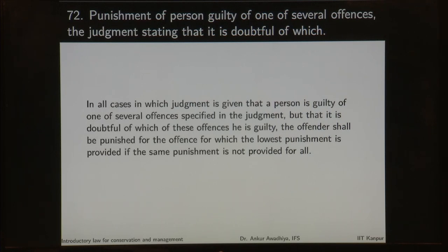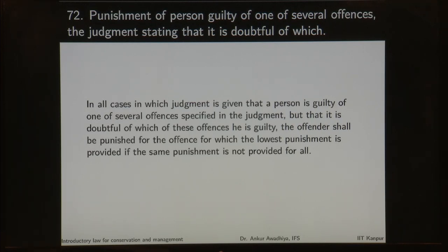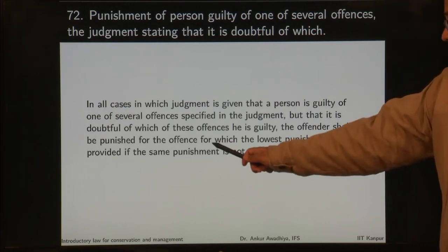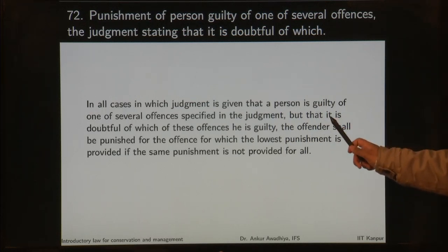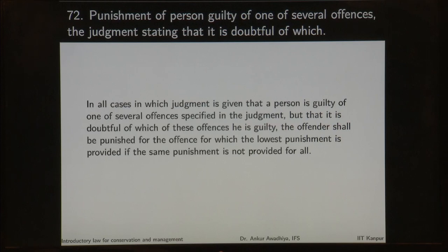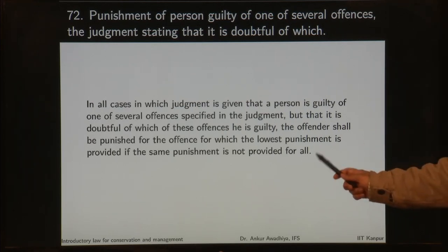Section 72 — punishment of a person guilty of one of several offences, the judgment stating that it is doubtful of which. In all cases in which judgment is given that a person is guilty of one of several offences specified in the judgment but it is doubtful of which, the offender shall be punished for the offence for which the lowest punishment is provided, if the same punishment is not provided for all. So if there is doubt, the person will be given the benefit of doubt and given the smallest punishment.